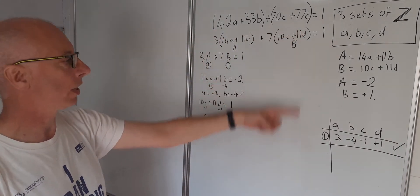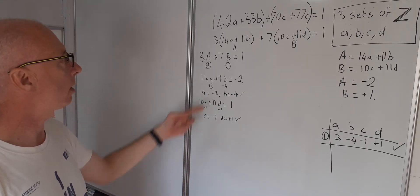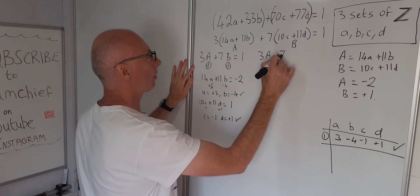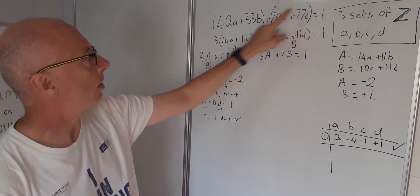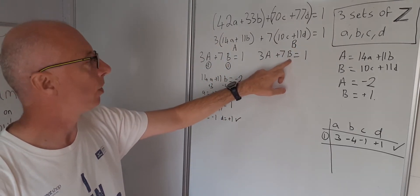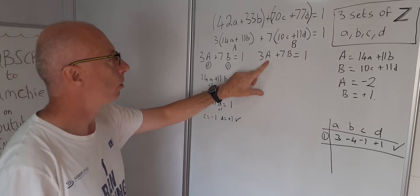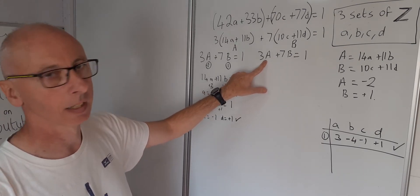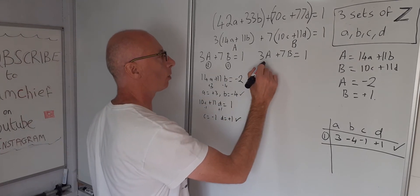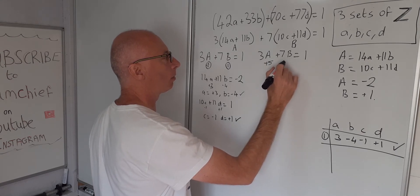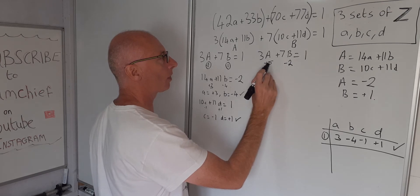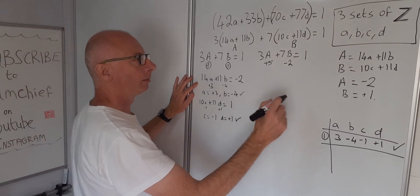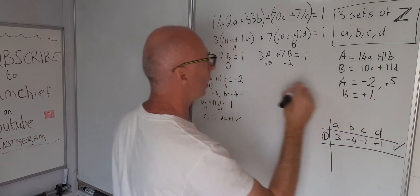Now we need two more solution sets. Going back to 3A + 7B = 1, I can find different integers. Since 2×7 = 14 and 3×5 = 15, the difference is 1. Letting A = +5 and B = −2 gives 3(5) − 7(2) = 15 − 14 = 1. So the second choice is A = 5, B = −2.